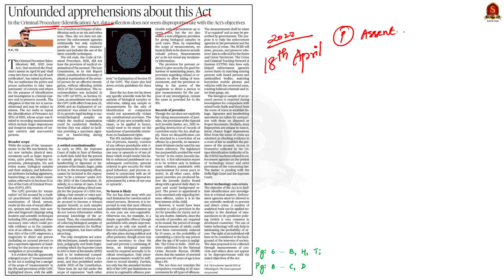The act also seeks to repeal the Identification of Prisoners Act of 1920. Despite being contradictory, the author of this article argues that the act does not violate any fundamental rights. Let us quickly go through some of the important features of this act and finally we will see the justification given by the author in implementing this act.